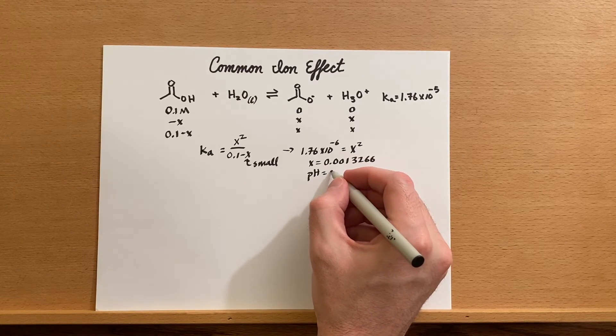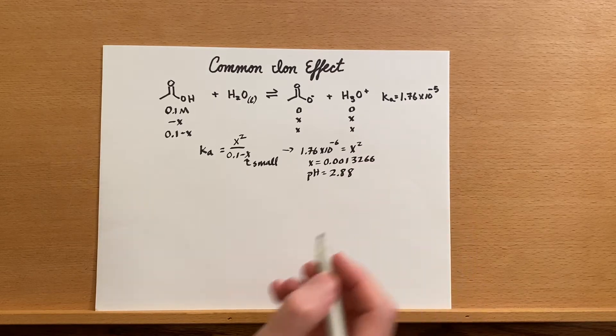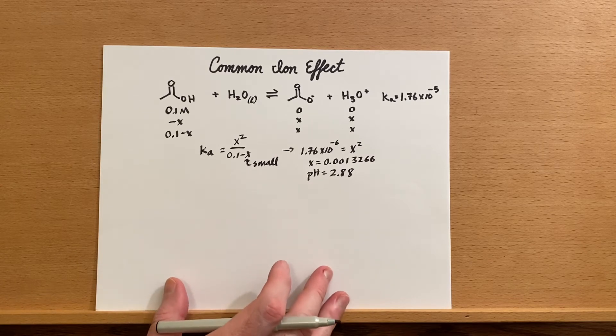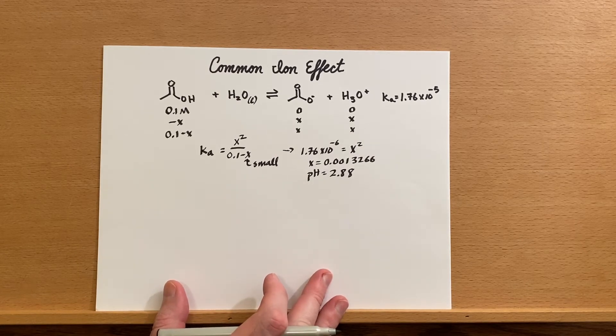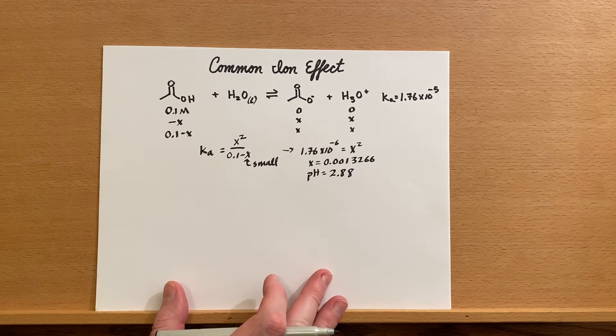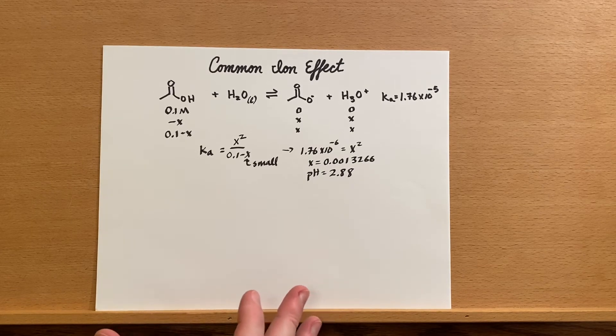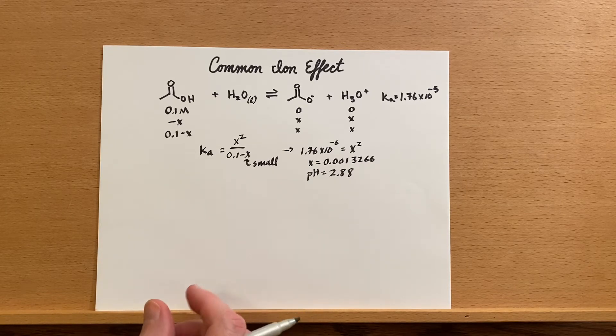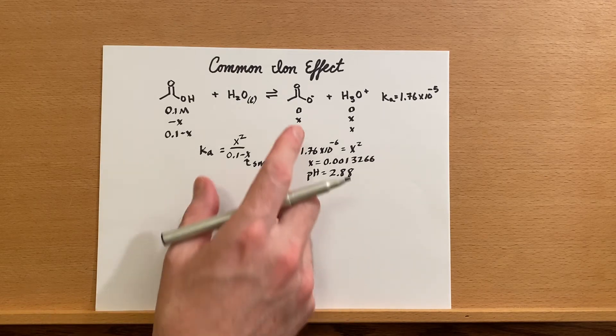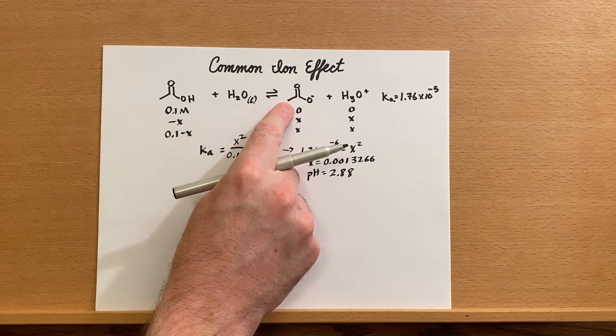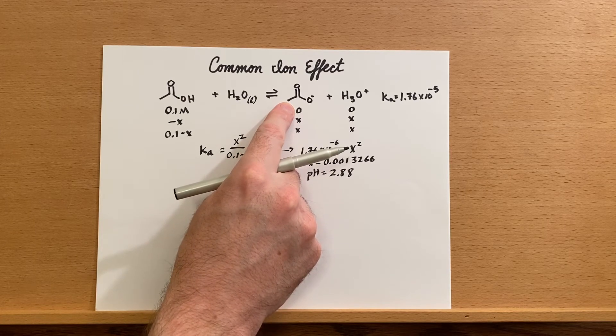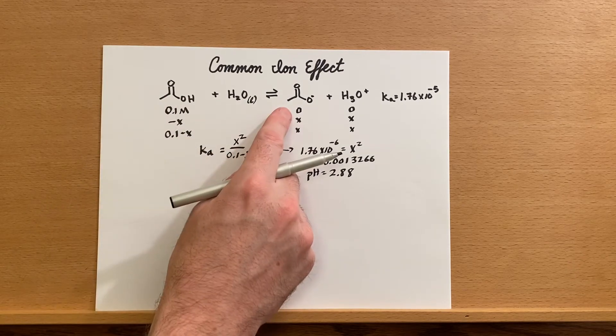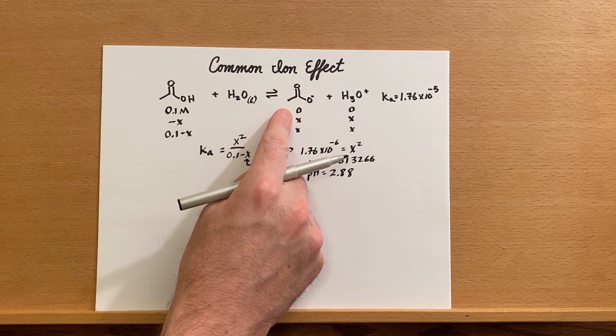This problem should be familiar to us. Now let's see what happens if we add in a common ion. That just means we have another ion in the solution that is involved in equilibrium. In this case our common ion will be the acetate ion. What if, instead of just starting with 0.1 molar acetic acid, I also had 0.1 molar sodium acetate in the solution?